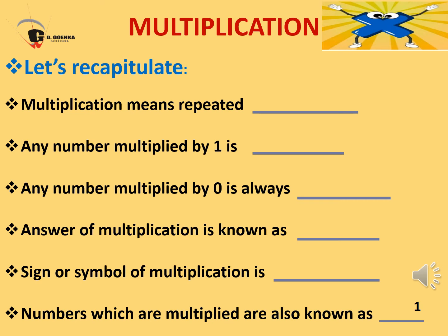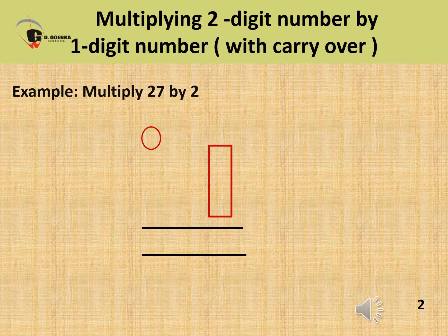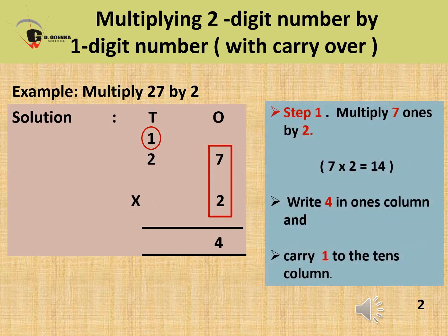Do you know why? Because in multiplication, the numbers can be multiplied in any order. Now, multiplying a 2-digit number by a 1-digit number with carryover.